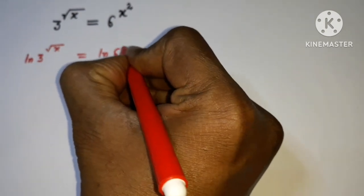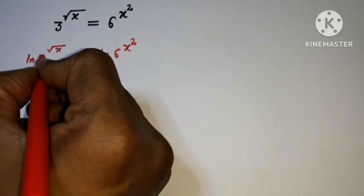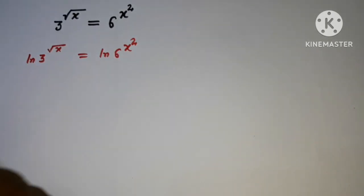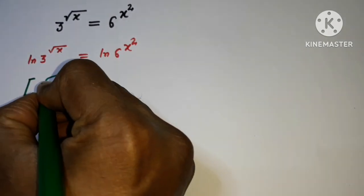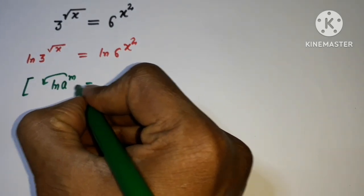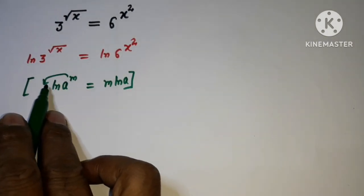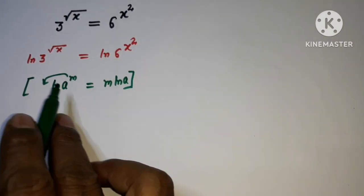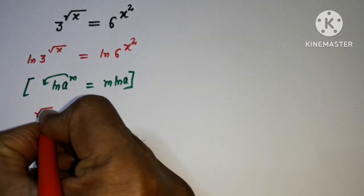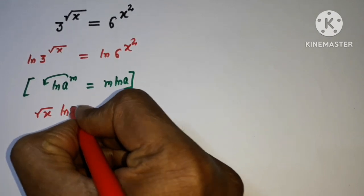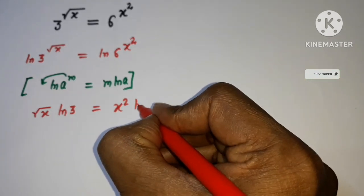On both sides I'm taking ln. We know the property of log: ln of e to the power m means m comes in front of ln. Using this property, root x will come just before ln 3, and x squared will come just in front of ln 6.